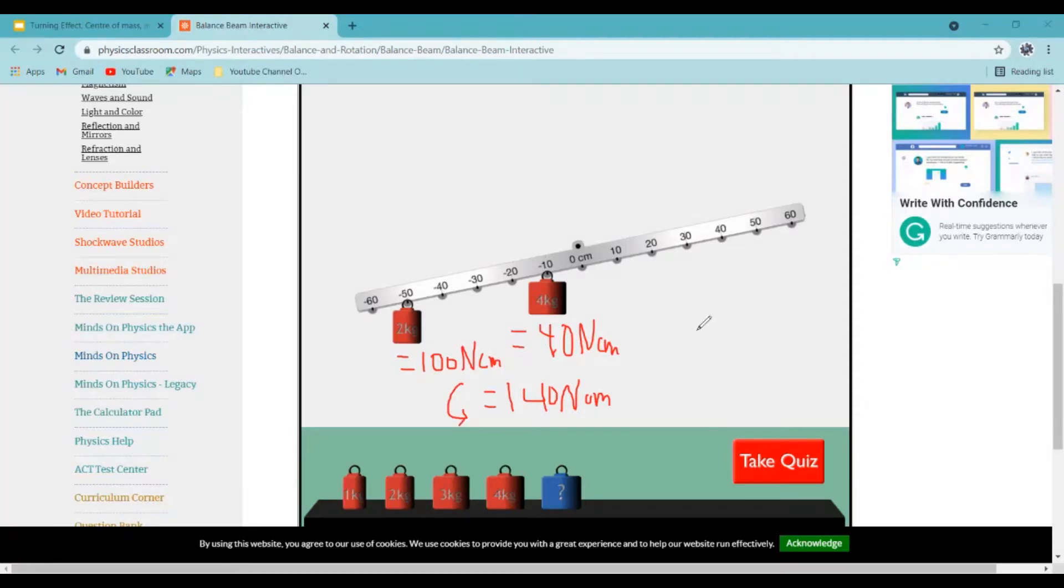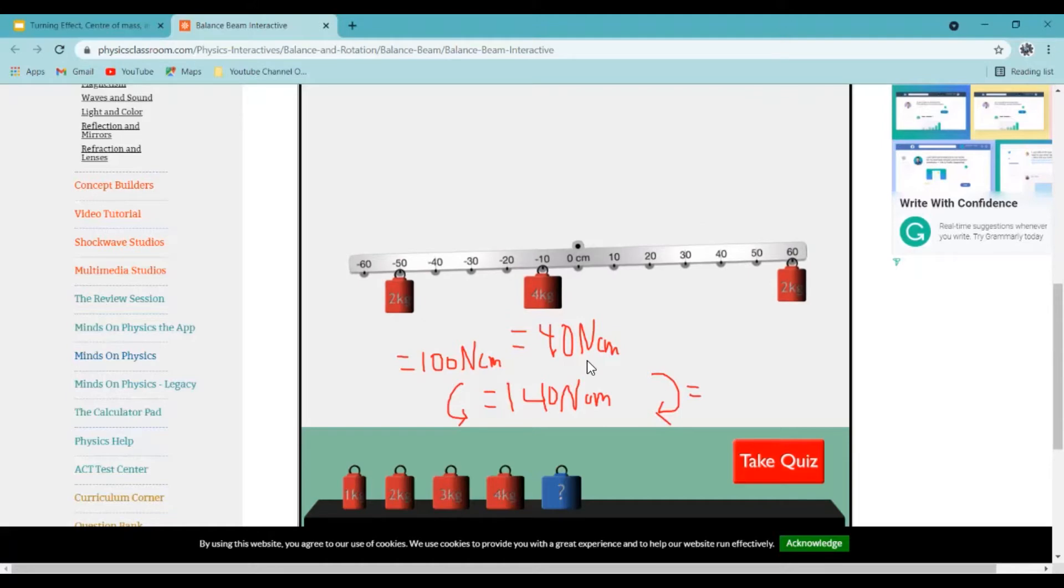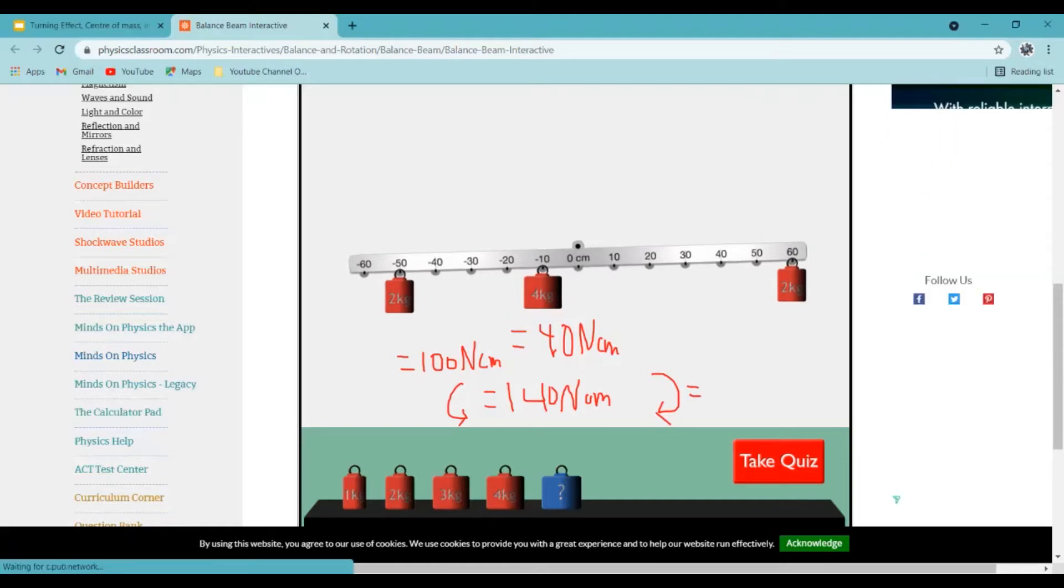So this would have to be equal to that. This is the right side, the clockwise. So 6 times 2, and we can only use 2 here. This is equal to 120 newton centimeters.